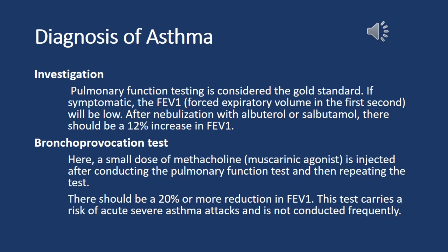Investigation: pulmonary function testing is considered the gold standard. If symptomatic, the FEV1 — forced expiratory volume in the first second — will be low. After nebulization with albuterol or salbutamol, there should be a 12% increase in FEV1. Bronchoprovocation test: a small dose of methacholine, a muscarinic agonist, is administered after conducting the pulmonary function test and then repeating it. There should be a 20% or more reduction in FEV1. This test carries a risk of acute severe asthma attacks and is not conducted frequently.